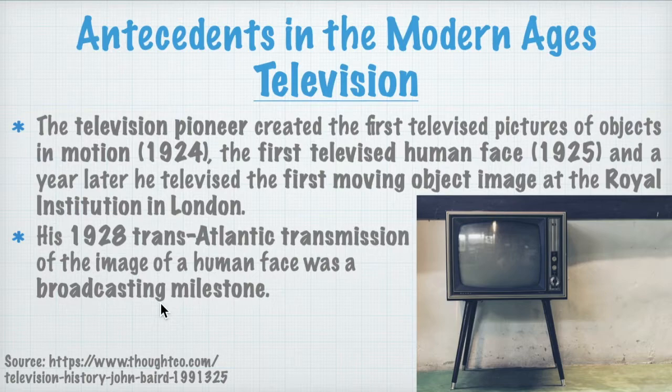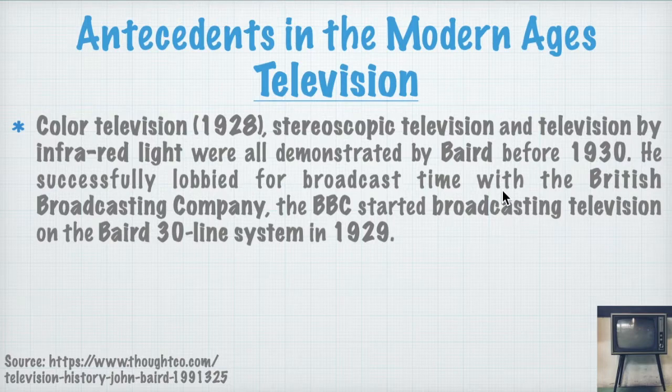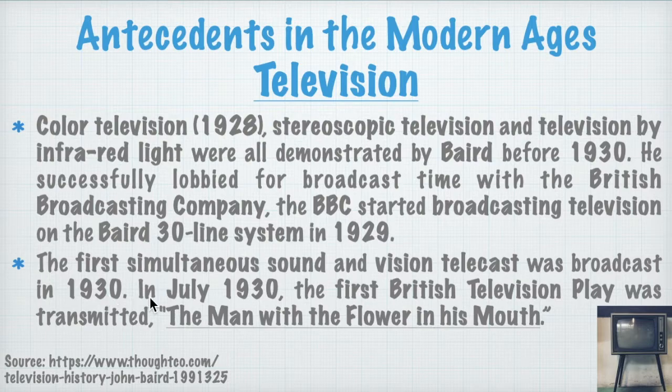Color television started in 1928. Stereoscopic television and television by infrared light were all demonstrated by Baird before 1930. He successfully lobbied for broadcast time with the BBC, the British Broadcasting Company, and they started broadcasting on the Baird 30-line system in 1929. The first simultaneous sound and vision telecast was broadcast in 1930, and in July 1930, the first British television play was transmitted — entitled 'The Man with a Flower in His Mouth.'